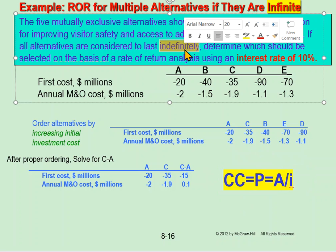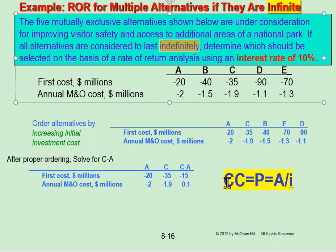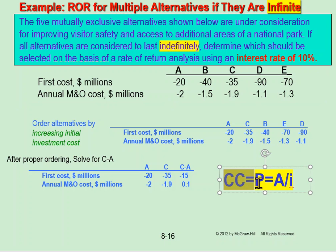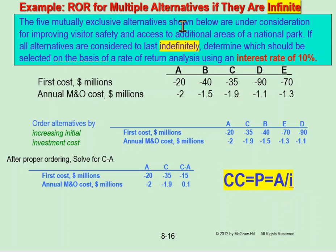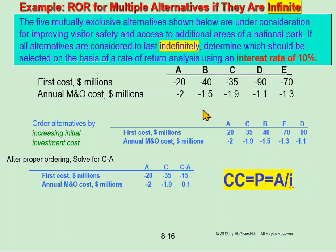To solve for capital cost, you find A and divide it by i. So if you have an initial cost P, you keep it. Anything related to A, you transfer it to P using this formula. For salvage value, we don't include it.